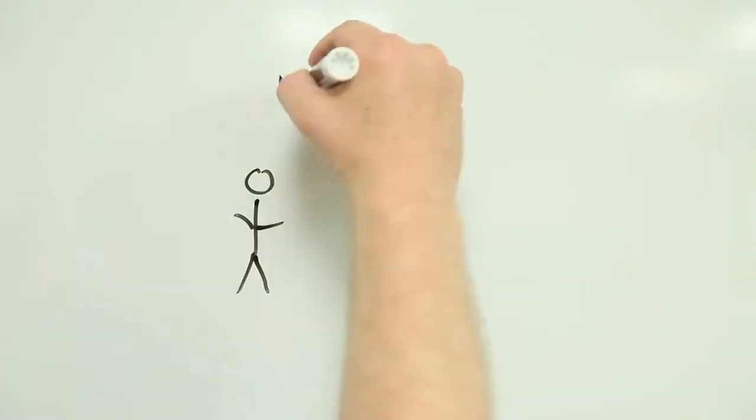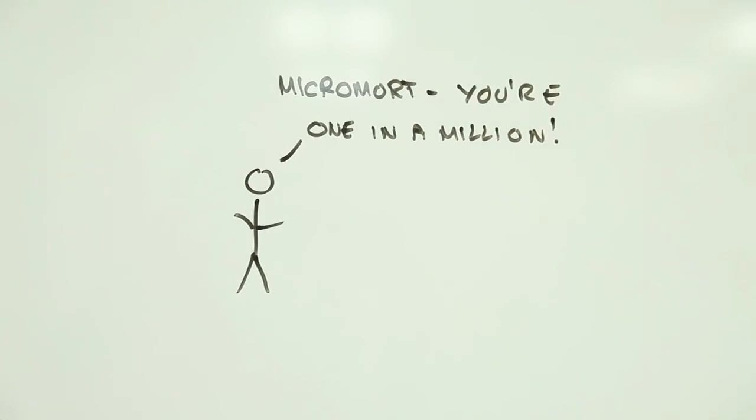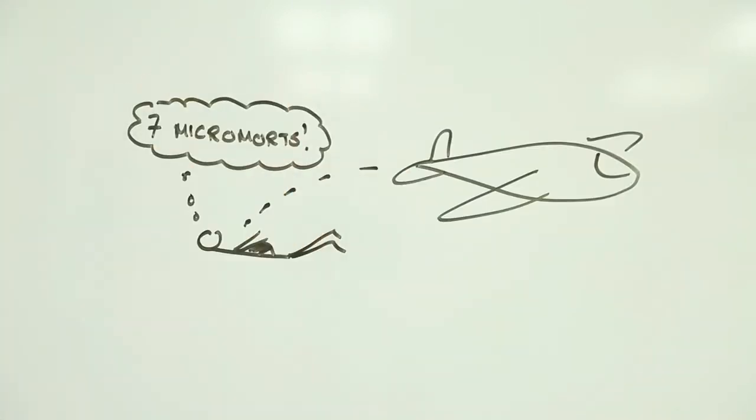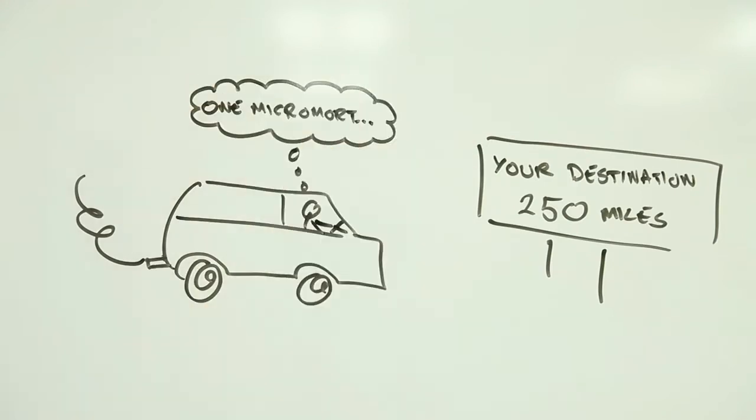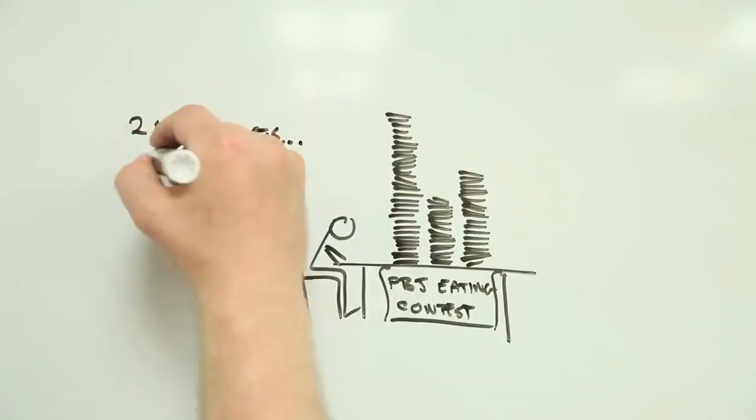One Micromort represents a one-in-a-million chance of you keeling over while doing what you're doing. The more Micromorts, the greater the likelihood of you not being around too long.